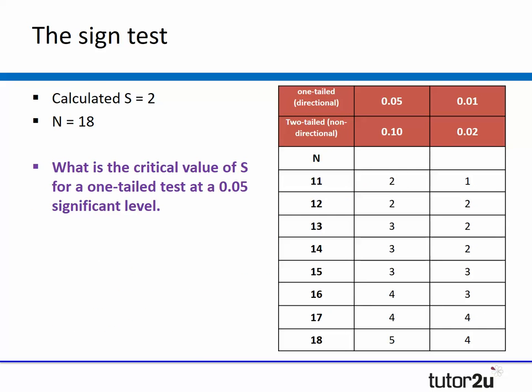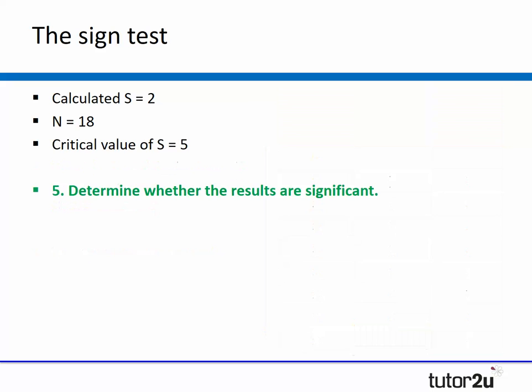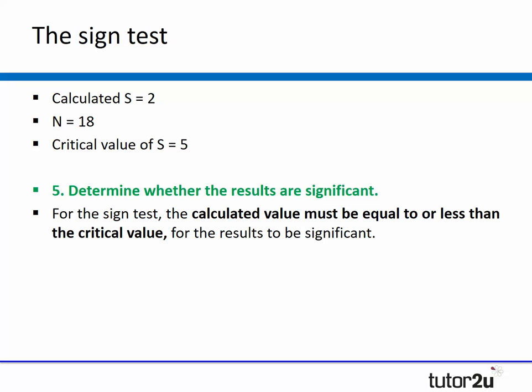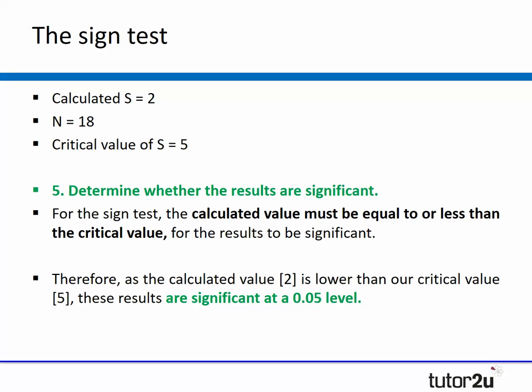If the question was what's the critical value of S for a one-tailed test at 0.05, we've got our calculated value and we know n is 18. We go to our 0.05 significance level for a one-tailed test, go down to 18, and in this case that means the critical value of S is 5. We've got a calculated value of S at 2, n equals 18, critical value of S equals 5. For the results to be significant, the calculated value must be equal to or less than the critical value. In this case that is absolutely the case, and therefore these results would be significant at 0.05 significance level.